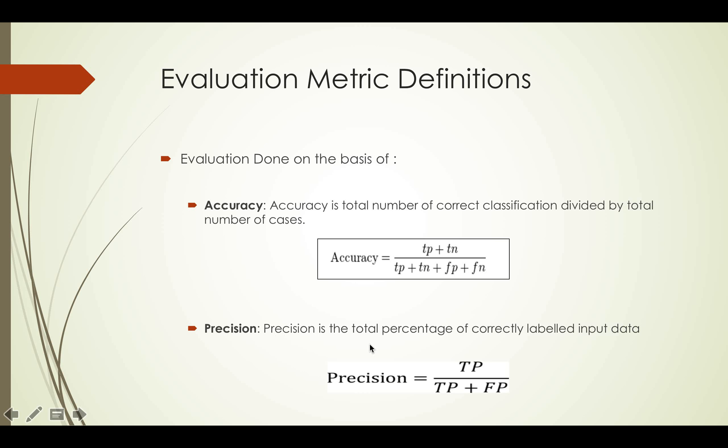Precision is the total percentage of correctly labeled input data. It is given by true positive upon the sum of true positive and false positive.